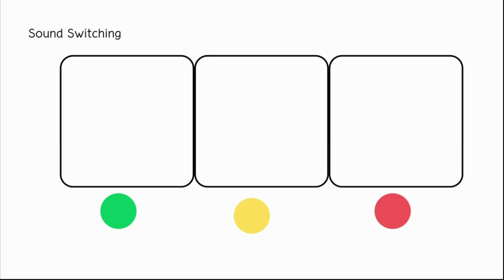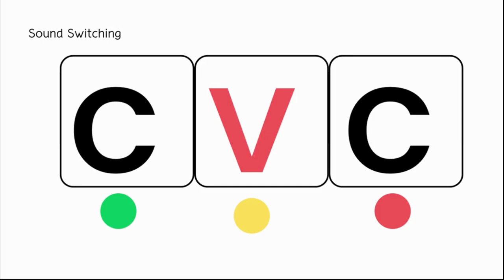In this activity, we're going to do sound switching using these three boxes on the screen — I like to refer to these boxes as sound boxes. Each box will have its own sound for the CVC words we're going to read. Pay close attention to the sound that switches to read the new word. I'm going to give you some time to read the word on your own and then we'll do it together. Let's get started.